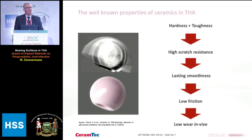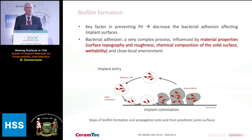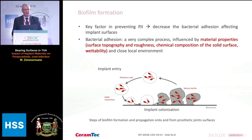So it seems that using ceramic bearings has a kind of protective effect against PJI. It is well known that the hardness of ceramic components is higher than metal, which brings higher resistance to scratching, better smoothness, long-lasting smoothness, and also low wear. But these surface properties may also have other advantages, including the formation of biofilm at the surface of the material. This bacterial adhesion is a complex process influenced by material properties like topography, roughness, and chemical composition.